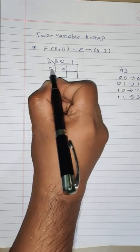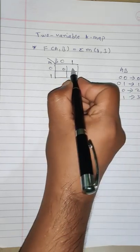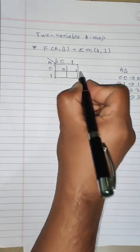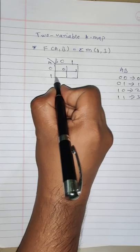For this cell, a equals 0, b equals 1. So 0 1 is 1, this cell is 1.